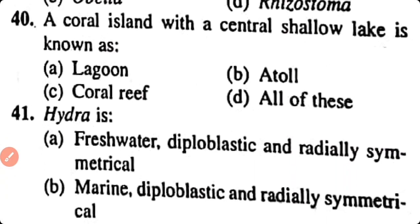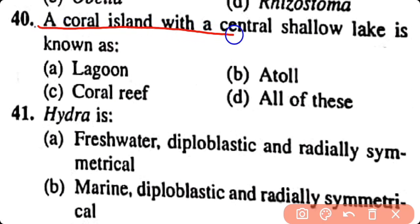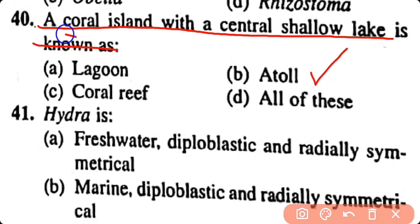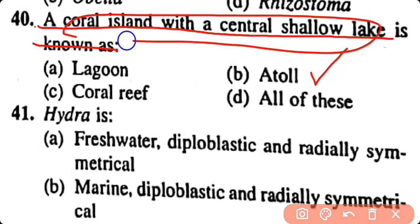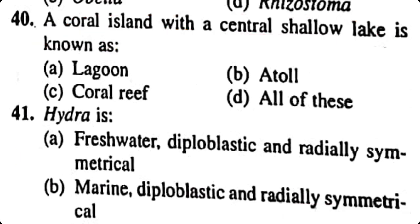Question number 40. A coral island with a central shallow lake is known as: lagoon, atoll, coral reef, all of these. Option B. A coral island with a central shallow lake is known as an atoll.